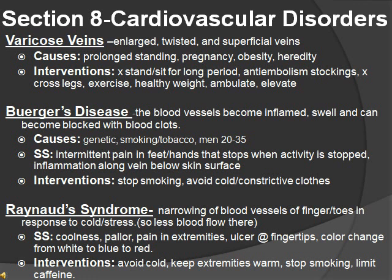Buerger disease is when the blood vessels become inflamed, swell, and can become blocked with blood clots. Causes include genetic factors, smoking, and tobacco use; men aged 20 to 35 are at risk. Signs and symptoms include intermittent pain in the feet and hands that stops when activity is stopped, and inflammation along the vein below the skin surface. Intervention: stop smoking and avoid cold and constrictive clothing.